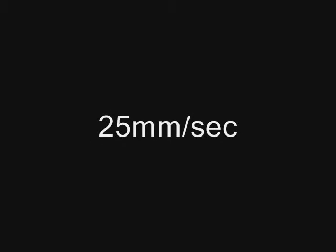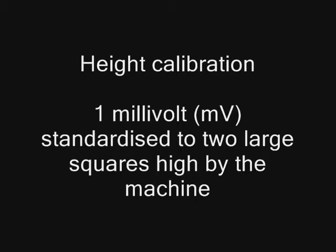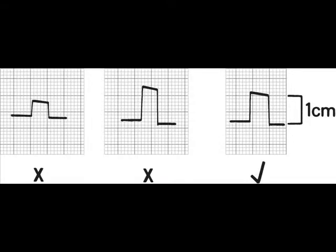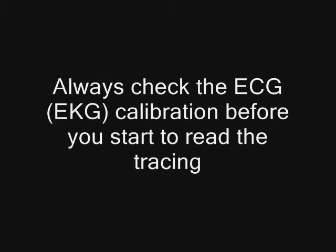Before we progress further, it's important to cover calibration on the 12-lead ECG. Internationally, paper comes out of the machine at a standardized speed of 25 millimeters per second. The graph paper represents time, and depolarization takes time to pass through the various areas of the heart — you need to analyze these timings, and you can't if the speed calibration is wrong. There is also a standardized box calibration to the left: one millivolt of sensed electrical activity is standardized to two large squares high. Check these before you start reading the 12-lead ECG.